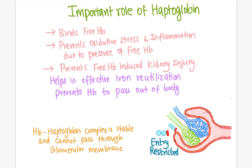One more important point: the haptoglobin-hemoglobin complex is very stable and cannot pass through the glomerular membrane. Entry into the kidney is strictly restricted.